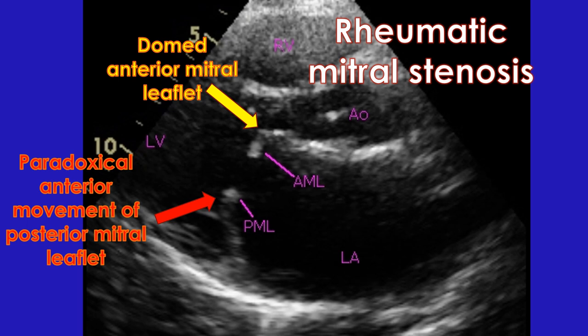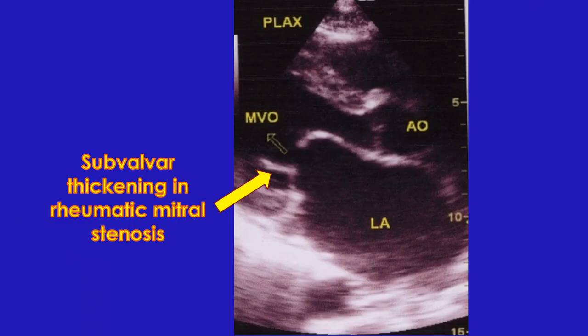In case of the mitral valve, commissural fusion causes paradoxical anterior motion during diastole instead of the normal posterior opening movement. In hypertrophic obstructive cardiomyopathy, the anterior mitral leaflet may move anteriorly in systole, producing obstruction of the left ventricular outflow tract. This is known as systolic anterior movement or SAM of the mitral valve. Thickening, fibrosis and calcification of the subvalvular apparatus is common in rheumatic mitral valve disease.